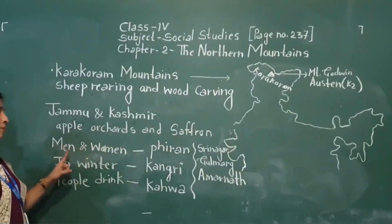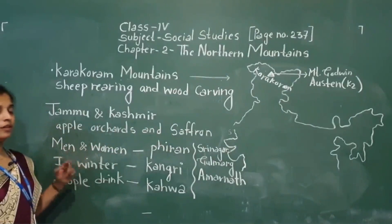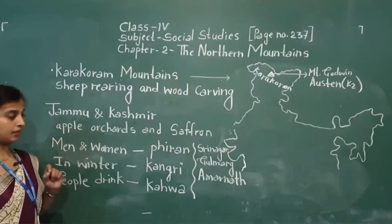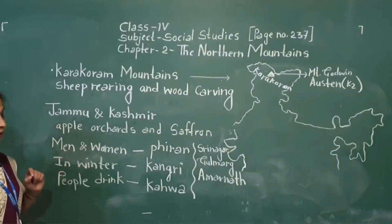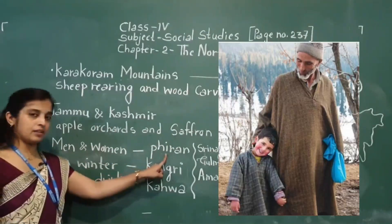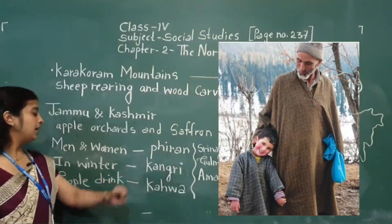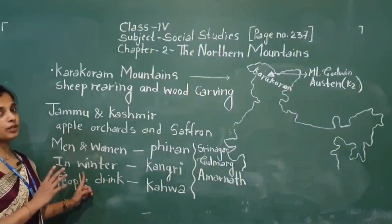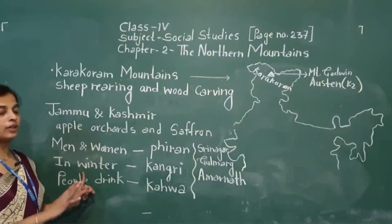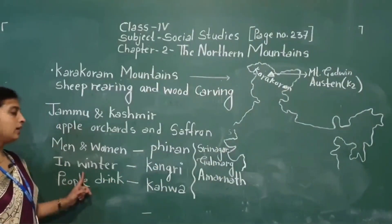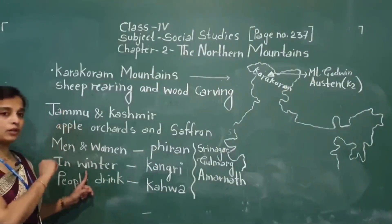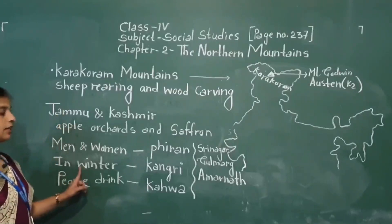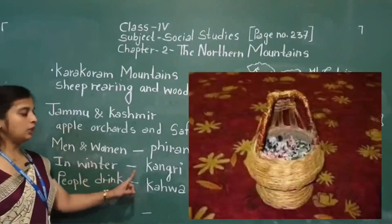The women and men of Jammu and Kashmir wear a long woolen kurta known as firan. In winter, because Jammu and Kashmir is very cold — lying in the extreme north in the Himalaya mountain ranges — they use kangri to keep warm.